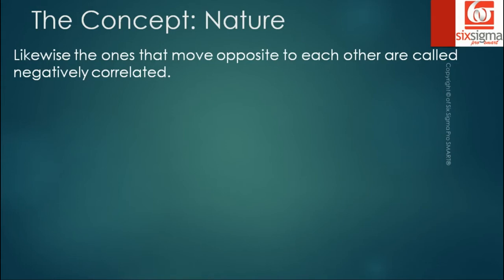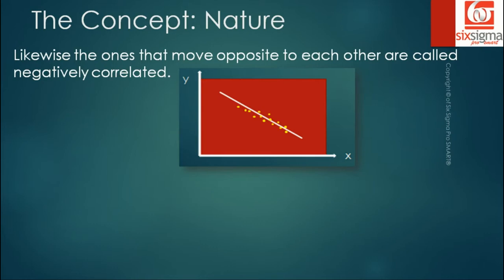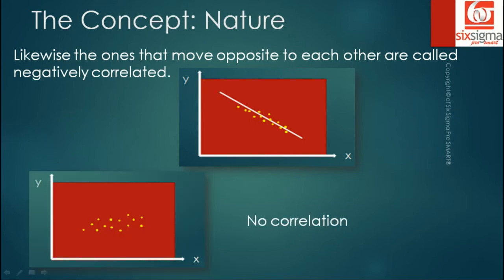Likewise, the ones that move opposite to each other are called negatively correlated. As you can see in this picture, these points have a downward slope and that white line that's trying to fit these points is sloped negatively. When x is increasing, there is a decrease in y. So we call it a negative correlation. Now there is a third case where there is no visible pattern or clear pattern when you look at the plot. We'll say that there seems to be no correlation.